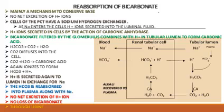This occurs in exchange for sodium ions, which move into the plasma. Simultaneously there is also the movement of bicarbonate from the renal tubular cells into the blood. So the bicarbonate is reabsorbed into plasma along with the sodium ions. There is no net excretion of hydrogen ions and no loss of bicarbonate through the urine, so there is again a conservation of base — that is, the conservation of bicarbonate.